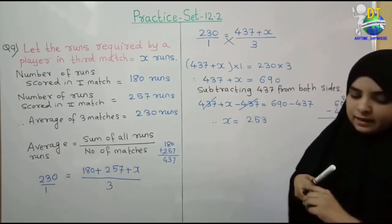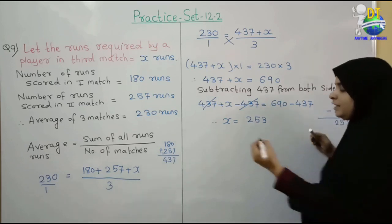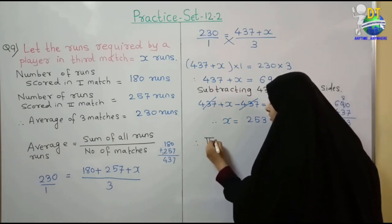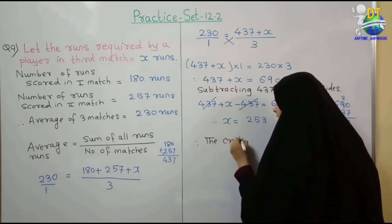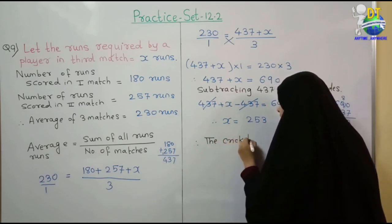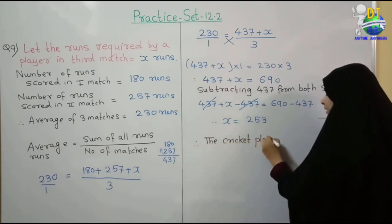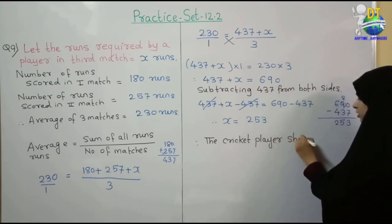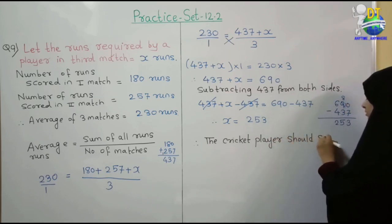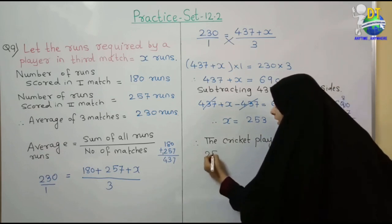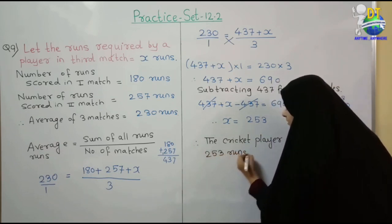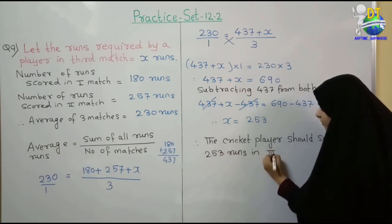Therefore the cricket player should score 253 runs in 3rd match.